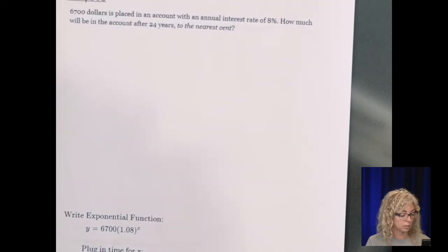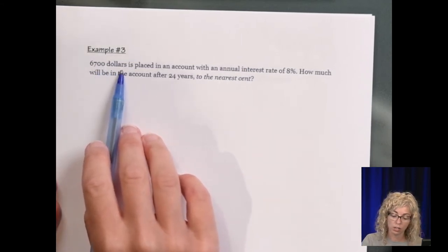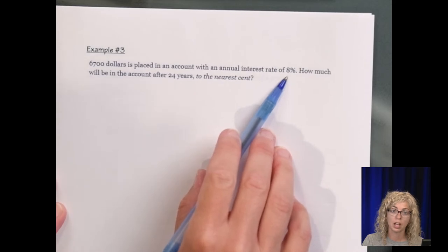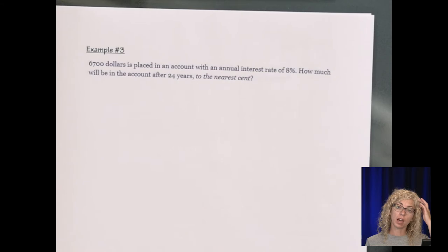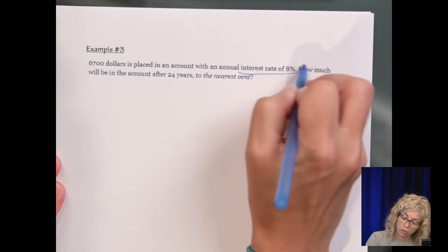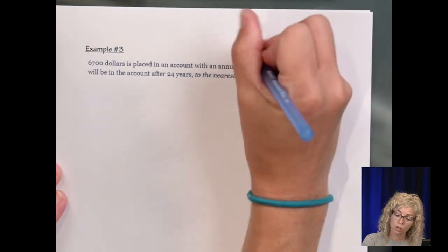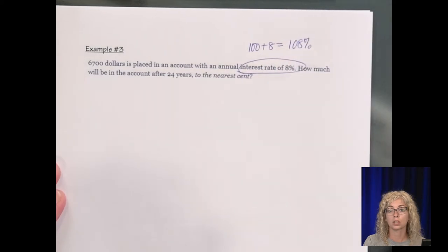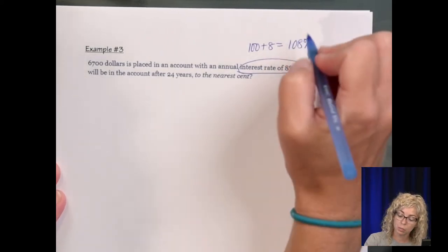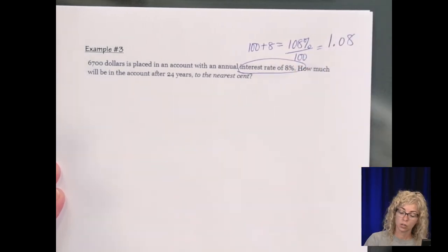Number 3, we have $6,700, and we're putting in an account with interest rate of 8%. How much will be in the account after 24 years to the nearest cent? So not only do we have to evaluate, but we need that exponential expression. Let's focus on the interest rate of 8%. So we're earning more than we typically would. So 100% plus 8% is 108%. That's what we're seeing is growth. So then as a decimal, divide that by 100, and you get the decimal 1.08.